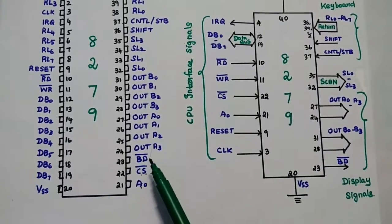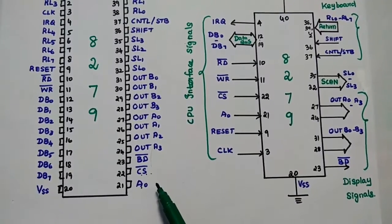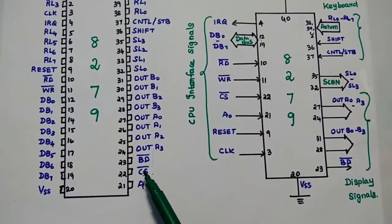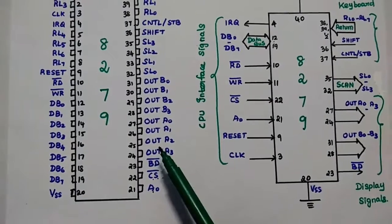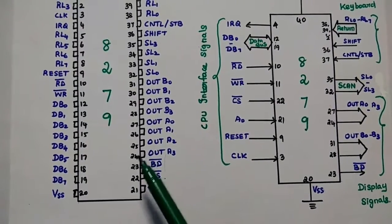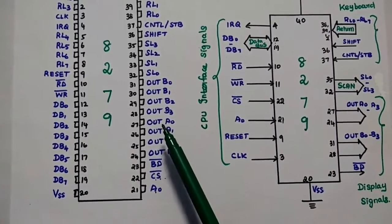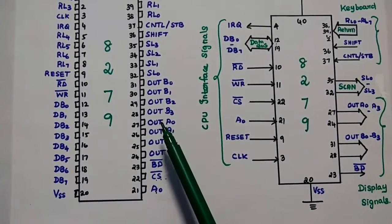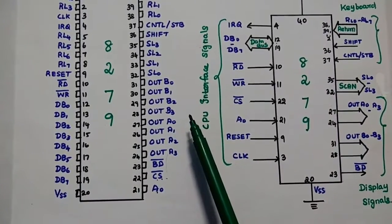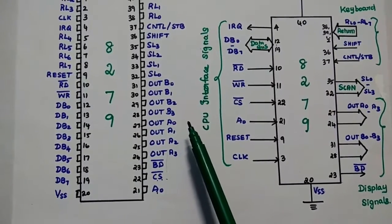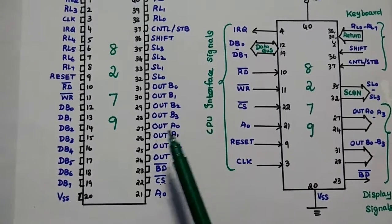Next is BD bar, which means blank detect. If there is any blank space in the display, it can be defined by this pin. It is also an active low signal — whenever it is low, it defines the blank space in the display. Next are the output signals. In the 8279, two 4-bit output lines are available: Out A0 to A3 and Out B0 to B3. These two 4-bit output lines are considered as one 8-bit port, mainly used for sending data to the display drivers.